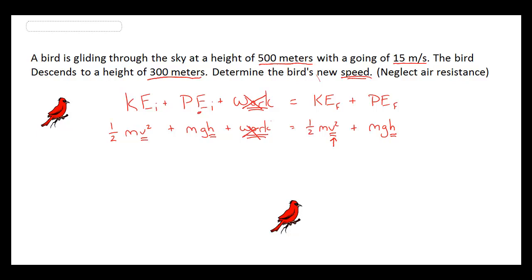Since there's no work, the amount of energy I have initially between my kinetic and my potential should be exactly the same amount of joules that I have at the very end, although it will be distributed a little differently at the end.